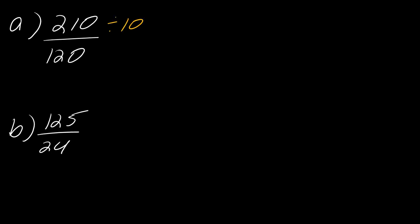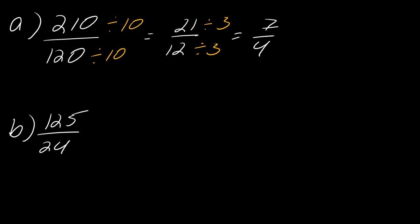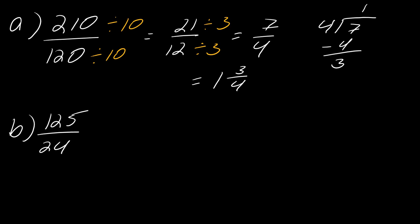For the first practice problem, I divide the top and bottom by 10 to get 21 over 12, then divide by 3 to get 7 over 4. Now using long division: 4 goes into 7 once, subtract 4, remainder is 3. So 7 over 4 is equivalent to 1 and three-fourths.